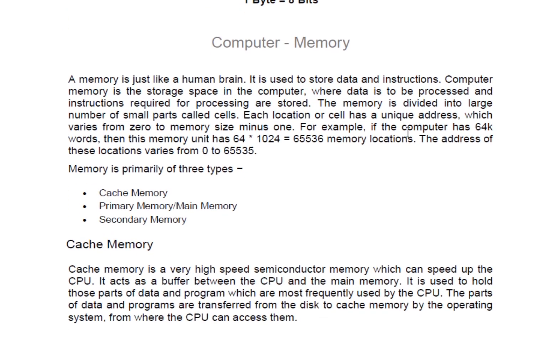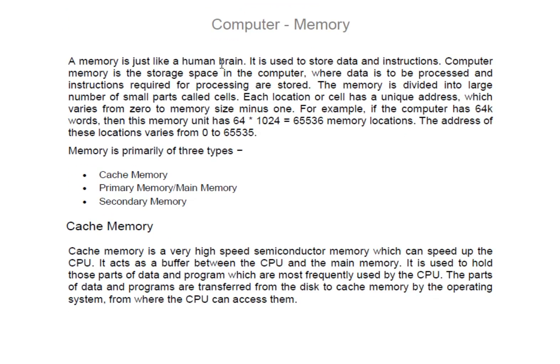Computer memory is just like a human brain — it gives the computer remembrance power to store data and instructions for further use. There are many types of memory, and every data stored in a computer has a specific address. For example, if you store a file in the C drive or a folder under the C drive, it has a particular address. Similarly, every data stored in a hard disk or RAM occupies a specific address, which also corresponds to memory size.